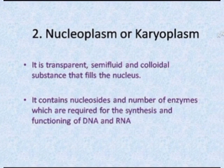The nucleoplasm contains dissolved phosphorus, ribose sugars, proteins, nucleotides, and nucleic acids. The nucleoplasm also contains certain thread-like elongated structures known as chromatin.